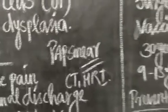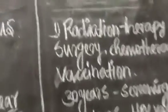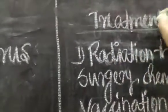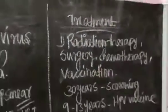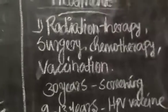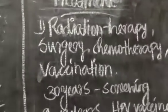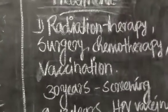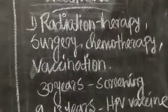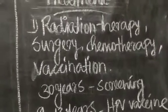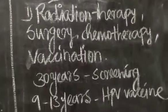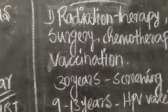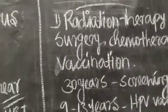For treatment, radiation therapy is one option used. Next is surgery and surgical operations. Chemotherapy involves the use of chemical drugs. Next is vaccination. These are the main cervical cancer treatments available.